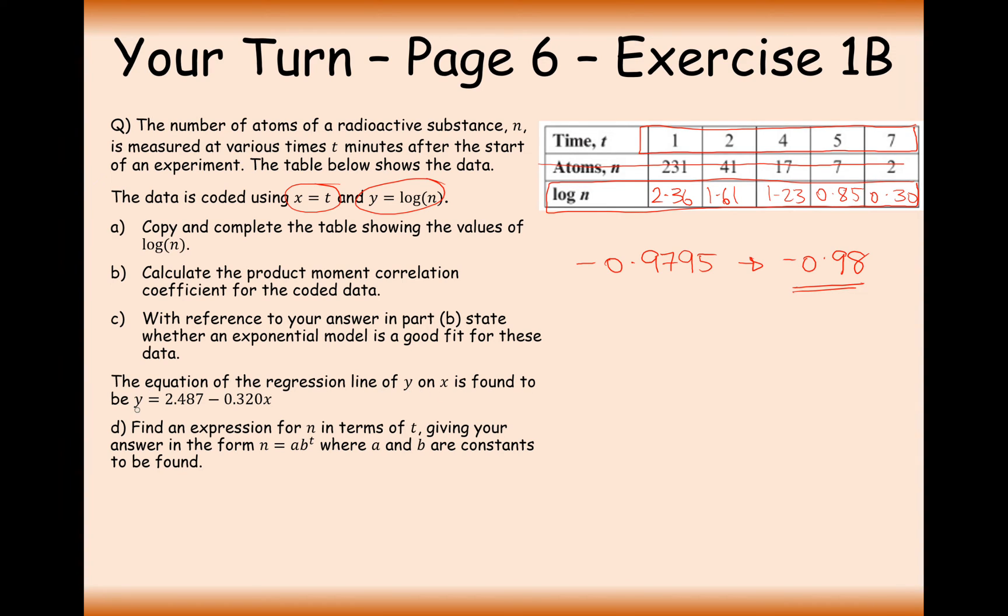The equation of the regression line of Y on X is found to be 2.487 minus 0.320X. Part D is find an expression for N in terms of T giving your answer in the form N equals AB to the power of T where A and B are constants to be found. So very similar type of rearrangements that we were required to do in part 1 of this video, Exercise 1A. So we're going to take the equation Y equals 2.487 minus 0.320X, and we're now going to replace Y with log N and replace X with T. So 2.487 minus 0.320T. You can see that's the case up here.